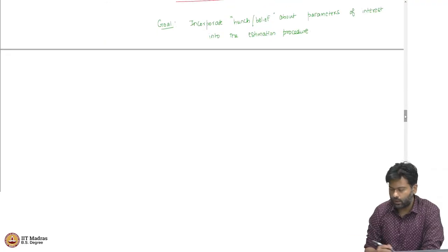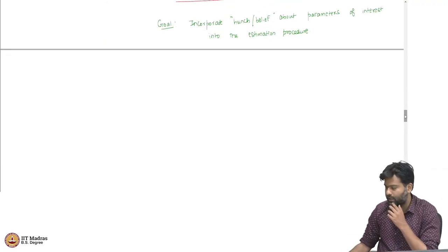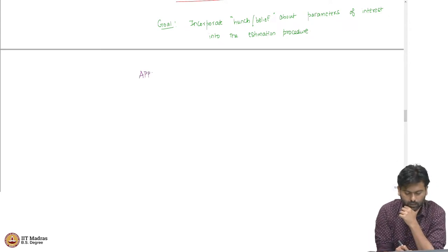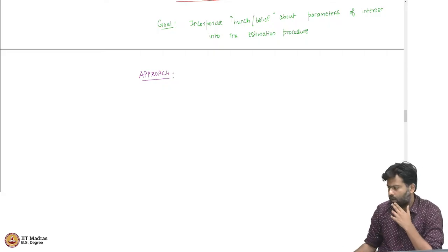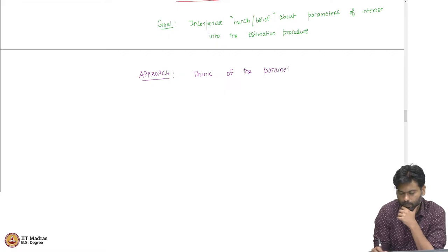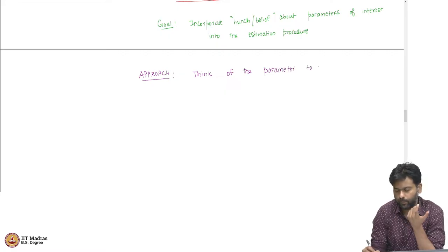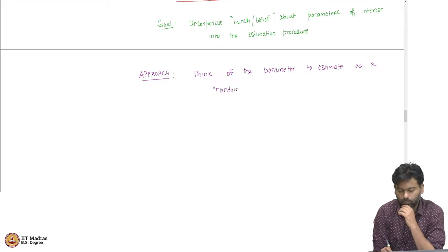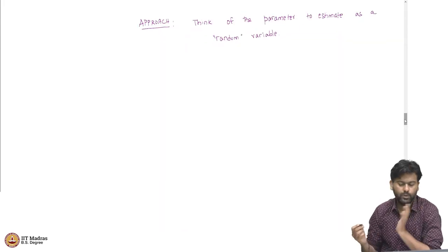How do we do this? The approach we will take is as follows: we are going to think of the parameter that we are trying to estimate as a random variable. I will tell you what that means intuitively, but that is the approach we are going to take.